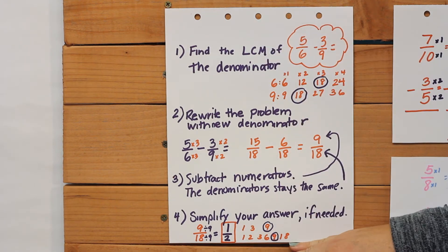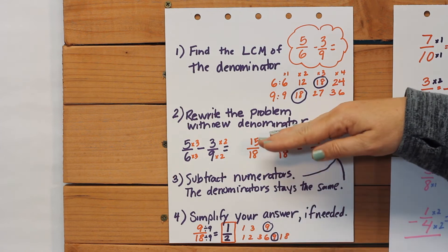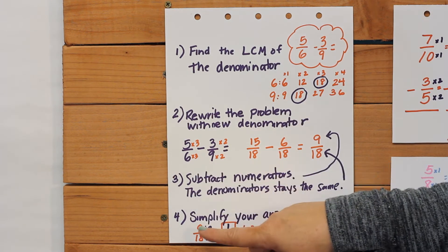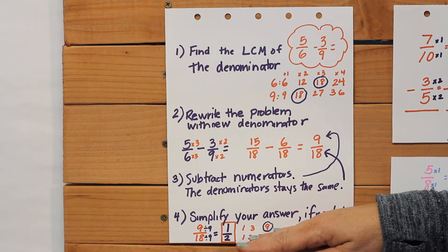So please remember the steps. Find the least common multiple for the denominator. Rewrite the problem with that new denominator by multiplying it. Subtract, and then just check your answer and make sure it's in simplified form.